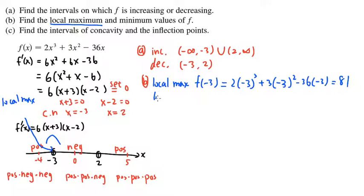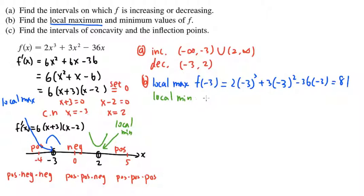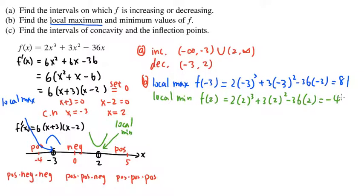For the local minimum: when x equals 2, the first derivative changes from negative to positive, meaning the graph goes down and then up, so we have a local minimum at x equals 2. Plugging 2 into the original function: 2 times 2 cubed plus 3 times 2 squared minus 36 times 2 gives negative 44. This is the local minimum value for f.